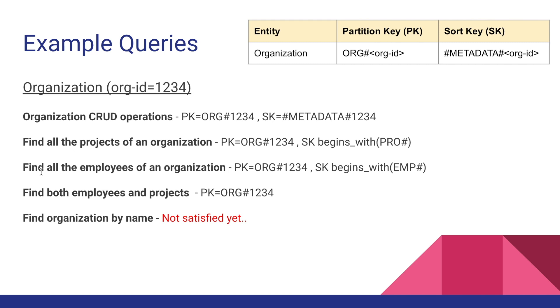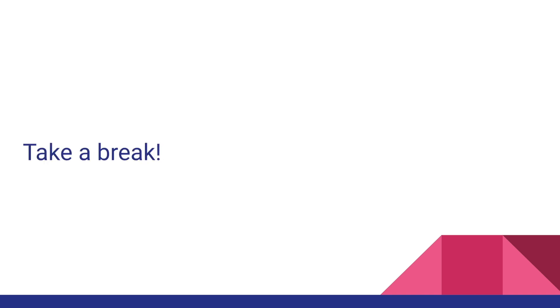If we want to retrieve both employees and projects for an organization, we simply provide only the partition key ORG#1234 without specifying a sort key value, and it will return both project and employee items. However, the access pattern for finding an organization by name is still not possible using just the partition key and sort key. It looks like this video is getting a little lengthy, so let's take a break and continue directly from where we left off.